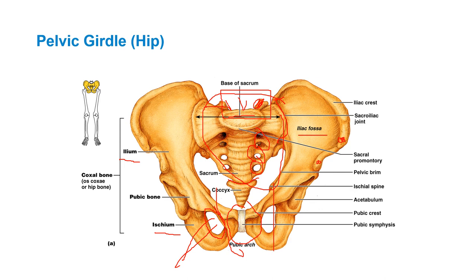The obturator foramen allows blood vessels and nerves to pass through. It's the largest foramen in the human body. The iliac fossa is here, and the iliac crest is up top — that's used as a landmark for posture, looking at a high hip or a low hip.